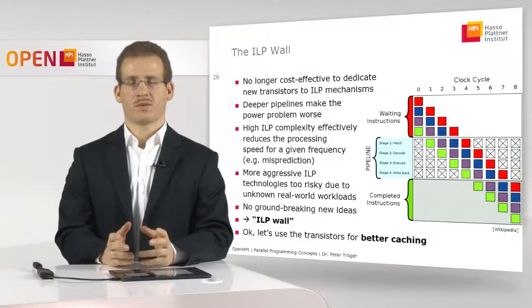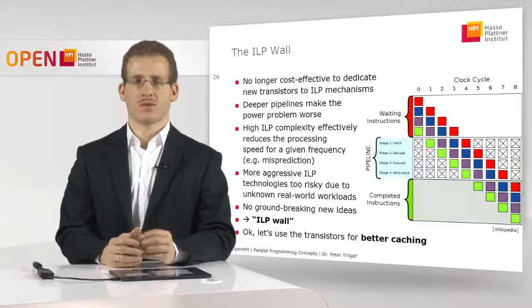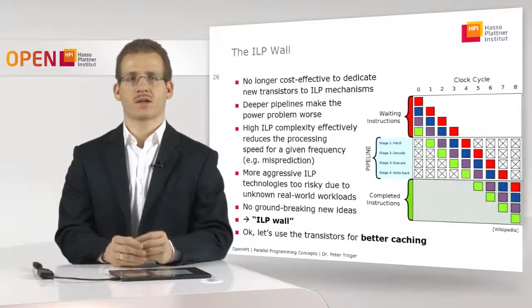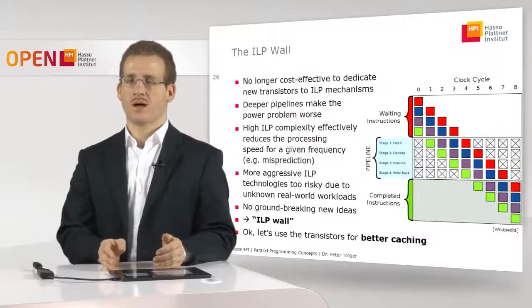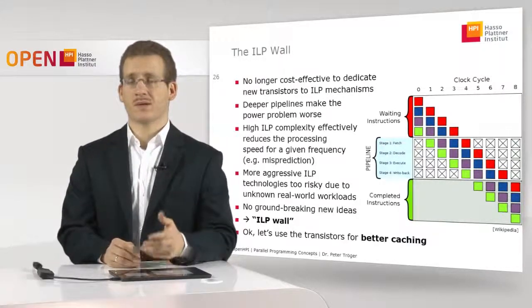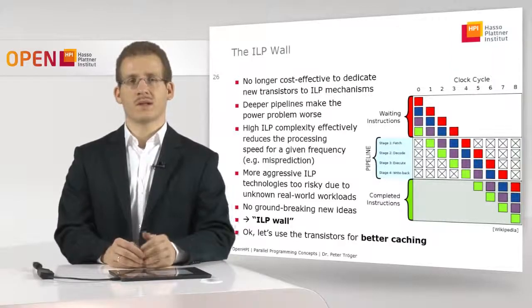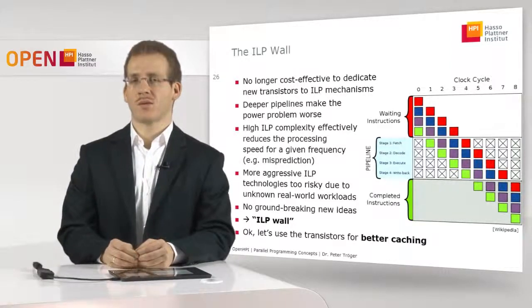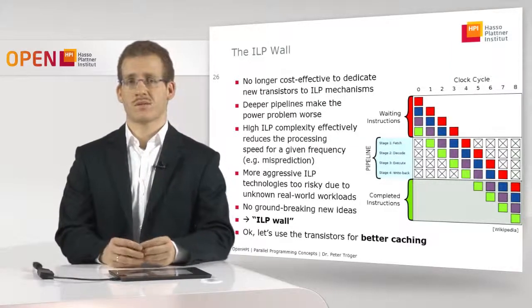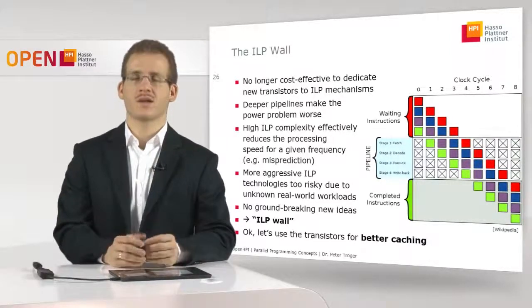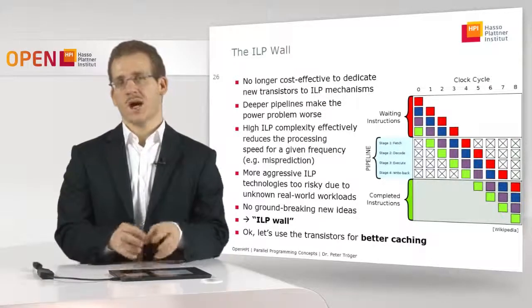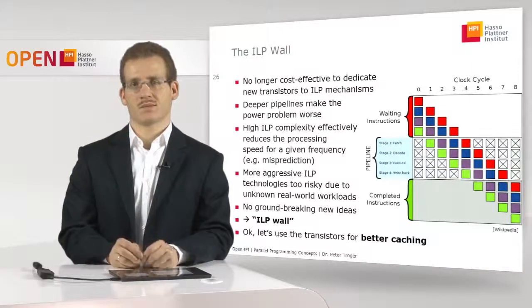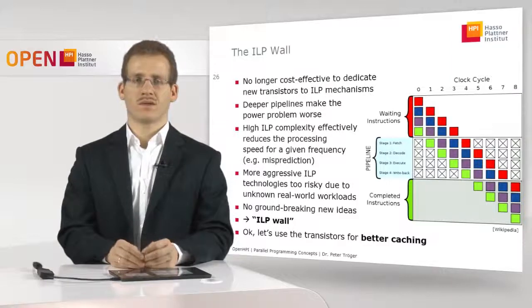For example, when we talk about pipelining — the approach shown in the picture here, where you overlap different instructions during given clock cycles — if you make larger and larger pipelines, this theoretically gives better and better improvements in software performance. But at some point you run into a power consumption problem with these deep pipelines because all instructions have to be handled in the clock cycles. You also have a complexity problem where you may make things worse when you have to empty the pipeline for different reasons.